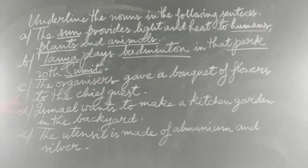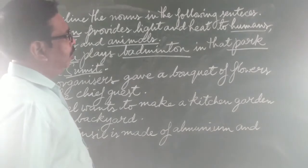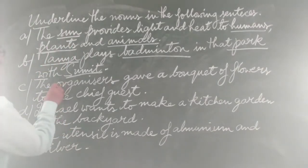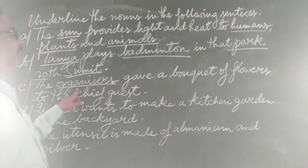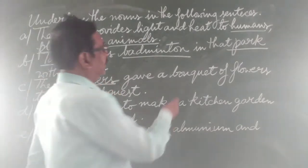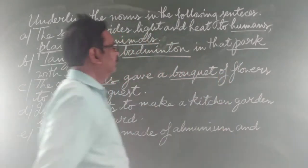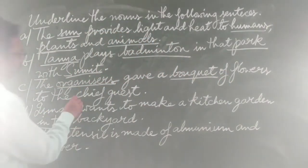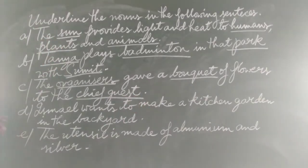Come to C: 'The organizers gave a bucket of flowers to the chief guest.' Here, 'organizers' is a collective noun. 'Bucket' is also a collective noun. And 'chief guest' is a noun. Now come to D: 'Smile wants to meet and have a kitchen garden in the backyard.' Smile is a proper noun.